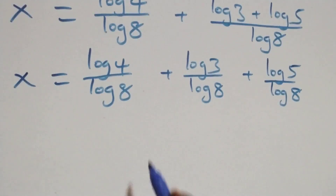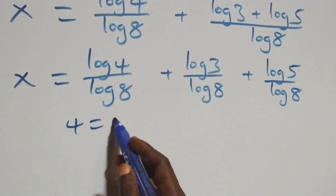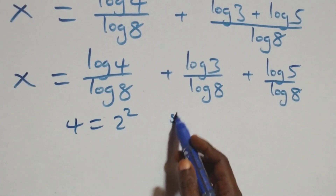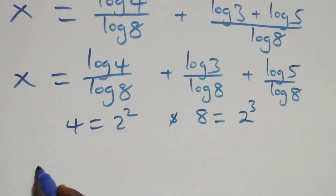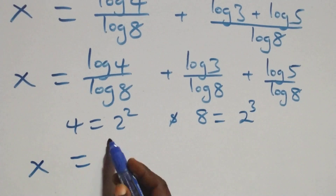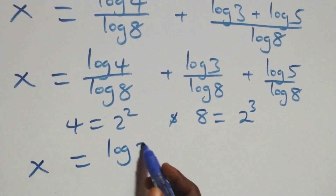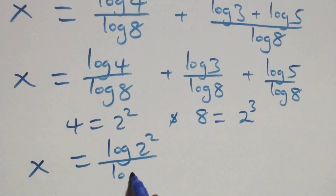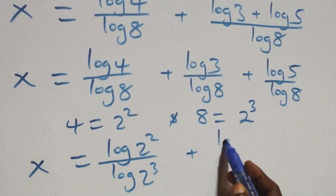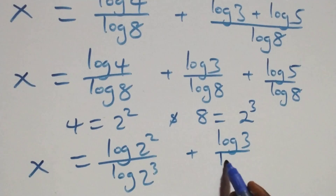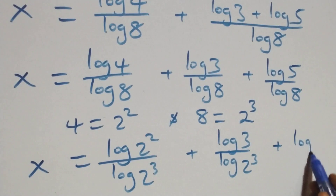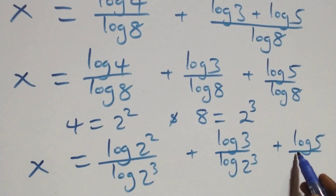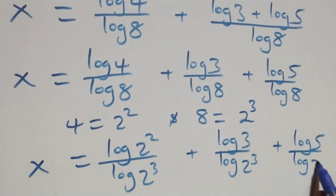Here we can write 4 as 2 times 2, that is 2 squared. Also, 8 as 2 times 2 times 2, that is 2 cubed. Then what we have becomes x equals to log(2 squared) over log(2 cubed) plus log 3 over log(2 cubed) plus log 5 over log(2 cubed).